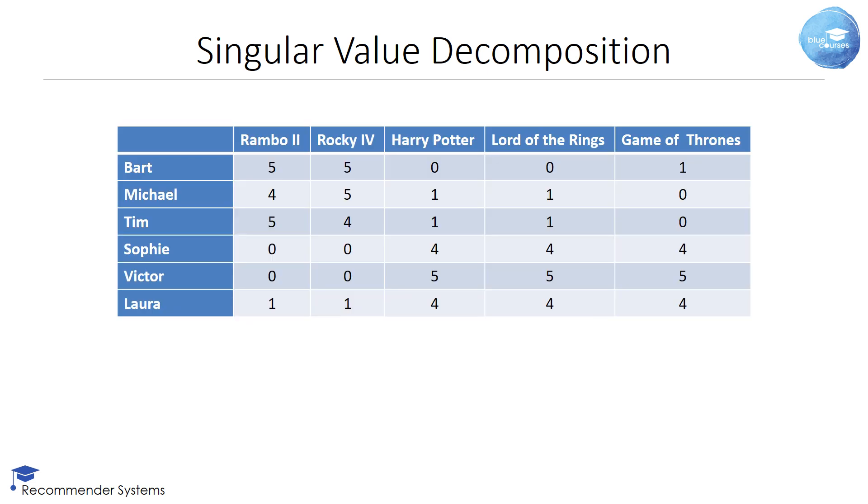Let's work out an example to illustrate how SVD works. Suppose we have a rating matrix with 6 users: Bart, Michael, Tim, Sophie, Victor, and Laura. We have 5 movies: Rambo 2, Rocky 4, Harry Potter, Lord of the Rings, and Game of Thrones. Since it's a small rating matrix, we can make some quick observations.